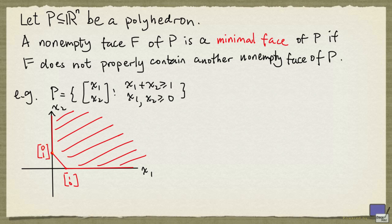Now, this over here is a face of P. But it's not a minimal face of P because this point here is a face of P that is contained in this green face. But there's no non-empty face of P properly contained in this blue face. So this is a minimal face of P.